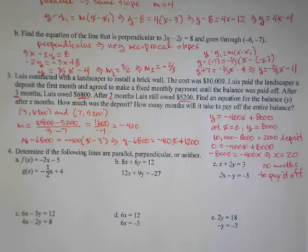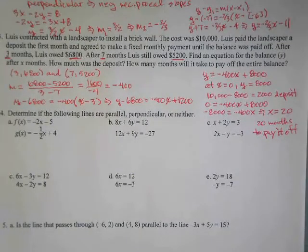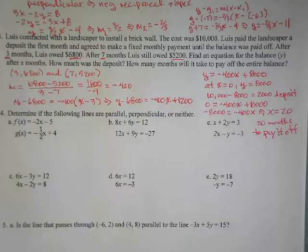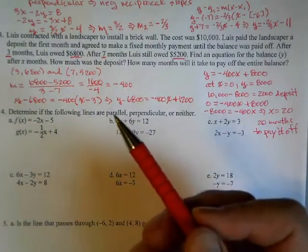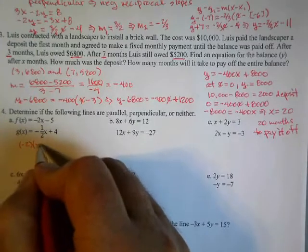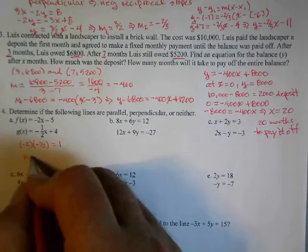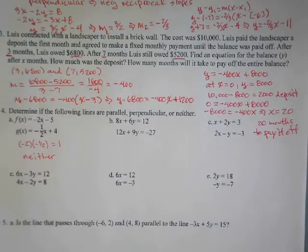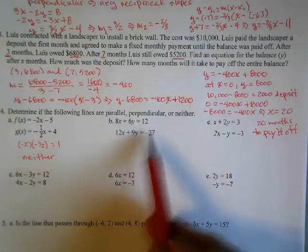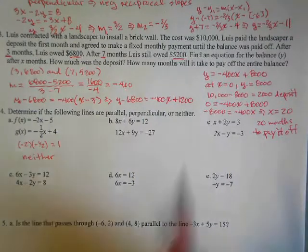In number 4, we look at pairs of lines and decide whether they are parallel, perpendicular, or neither. First thing to note: if the slopes aren't the same, they are not parallel. So negative two and negative one-half are not parallel. Multiplying them: they are perpendicular if the product equals negative one. Here the product is positive one, so in this case it is neither. For the next pair, the lines aren't in slope-intercept form, so I need to rearrange.